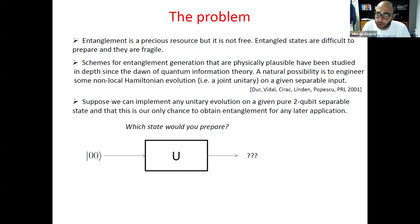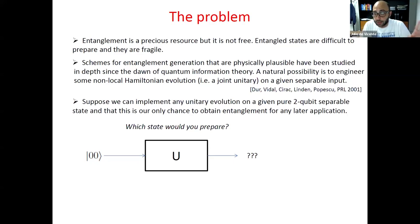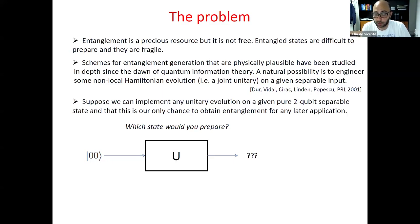Now I am ready to present the main problem. Entanglement is a precious resource — something useful, but it is not for free. Entangled states are difficult to prepare and they are fragile. Since the dawn of quantum information theory, physicists have been thinking about schemes to generate entanglement. At the theory level, a natural possibility that has been studied in the early days of quantum information theory is to engineer some non-local Hamiltonian evolution on a given separable input, which is modeled by allowing a separable input to undergo a joint unitary evolution.